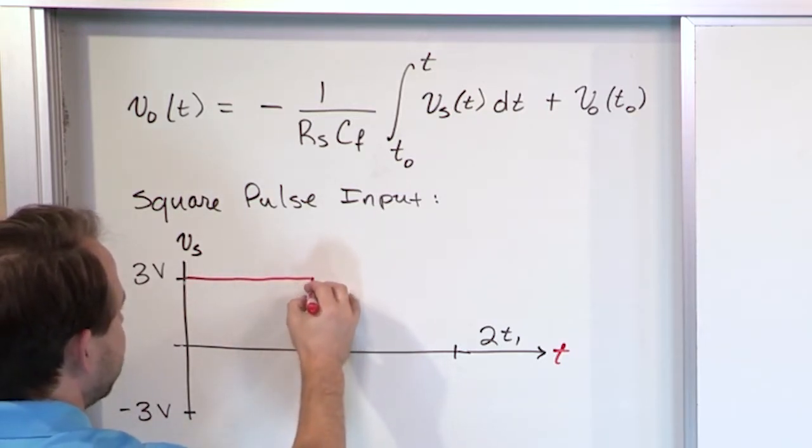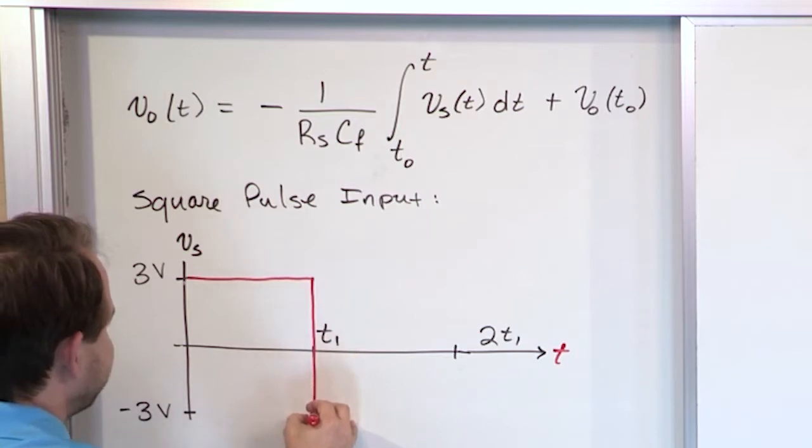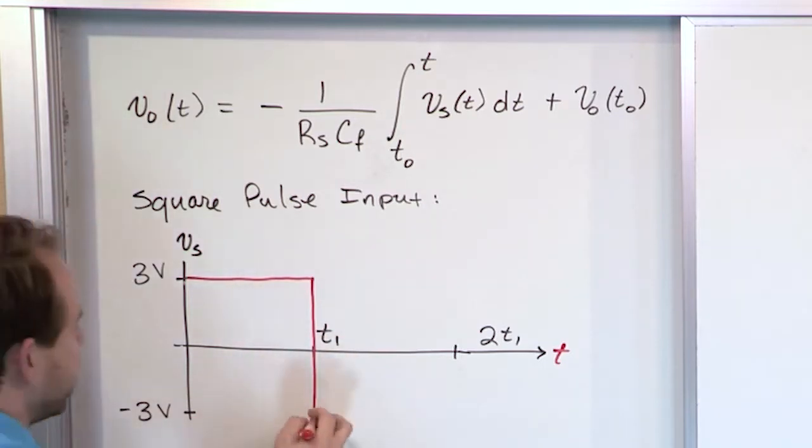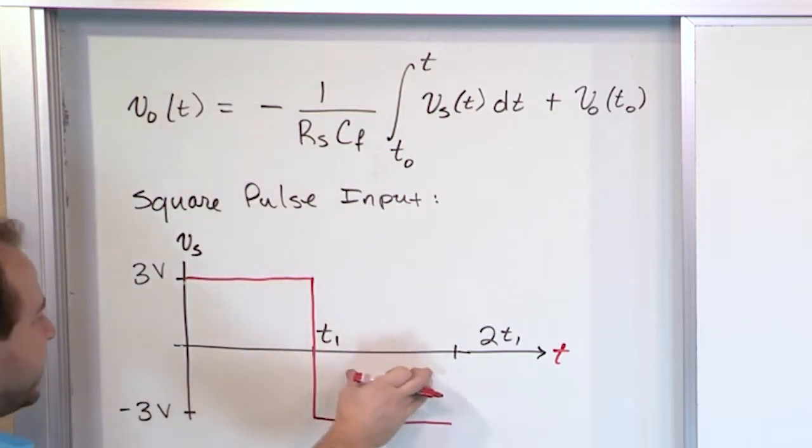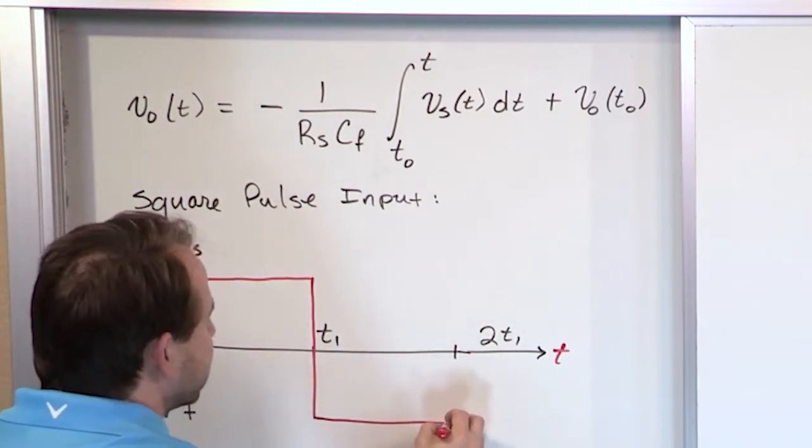Now at time T1, whatever it is, it's going to drop right through the axis and go straight down to the negative 3 volt area. And then it's going to go over here for the same exact duration of time. This is T and this is 2T. So this is the same thing. And then it's going to go back up.